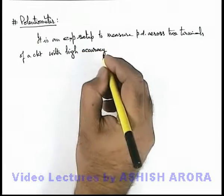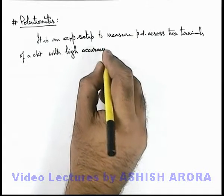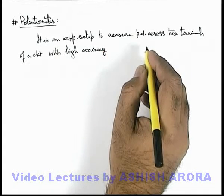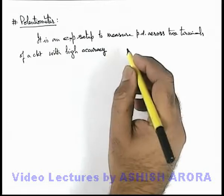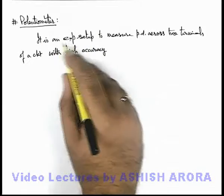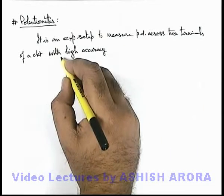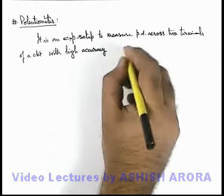Here we are mentioning higher accuracy because in the previous section we have studied that when voltmeter is used to measure potential difference, it draws some current due to which accuracy is relatively low. So for potentiometer here we are writing it is an experimental setup to measure potential difference across two terminals of a circuit, with high accuracy and we can add